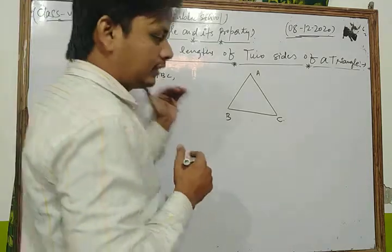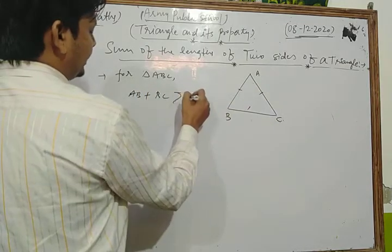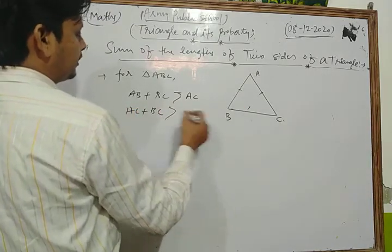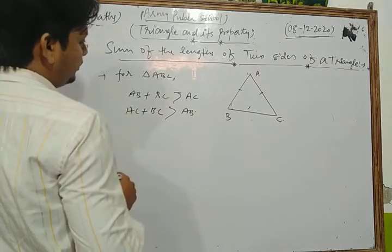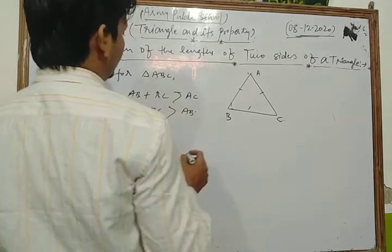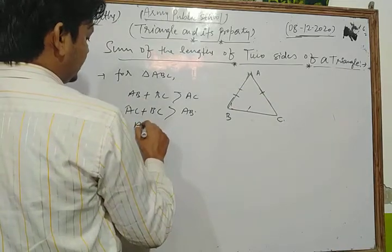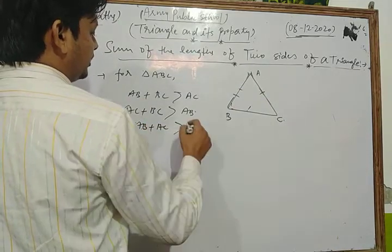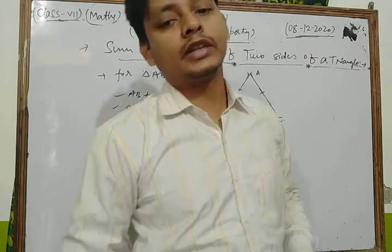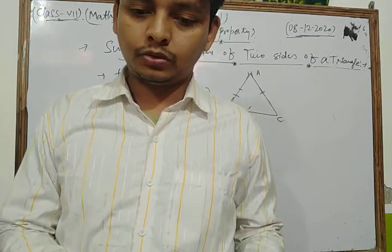It means: AB plus BC is always greater than AC; AC plus BC is always greater than AB; and AB plus AC is always greater than BC. This is one of the most important properties of a triangle — the sum of any two sides of a triangle is always greater than the third side.